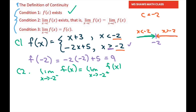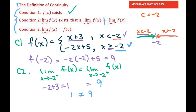From the left — all numbers less than negative 2 — we use the upper portion, so we plug in negative 2: negative 2 plus 3 equals 1. From the right — all numbers greater than negative 2 — we use the lower portion: plugging in negative 2 gives 9. Since 1 does not equal 9, the limits are not equal, so condition 2 fails. This function is not continuous — it's discontinuous.